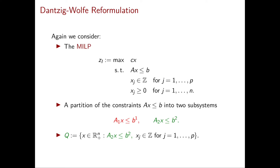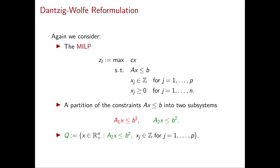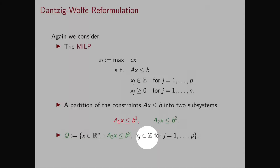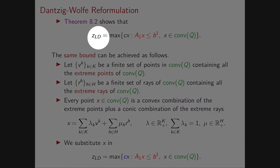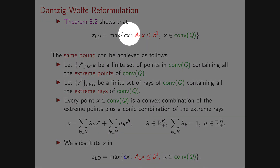As we did for the Lagrangian relaxation, we partition the constraints into red constraints and green constraints, and we define the set Q to be the set of vectors that satisfy the green constraints and integrality constraints. The main result from the Lagrangian relaxation is that the Lagrangian dual equals the maximum of cx subject to the red constraints and x in the convex hull of the set Q.